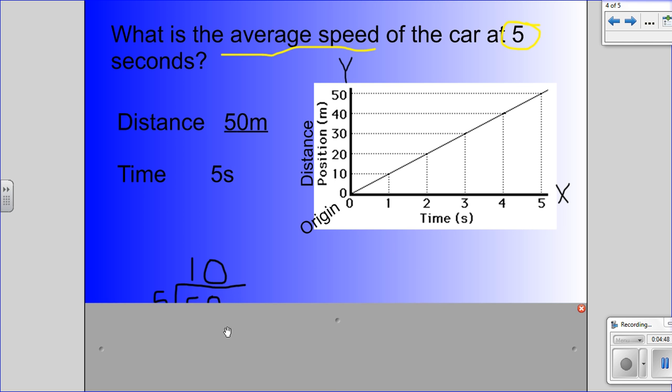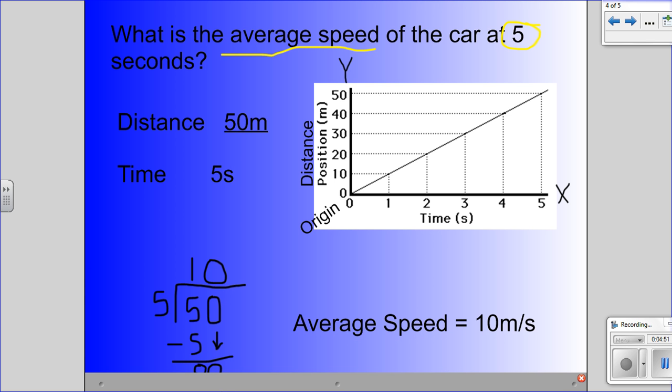Remember, we plug in our formula. 50 divided by 5 is 10. Our average speed is 10 meters per second. And again, I got the meters per second right here. Meters per second.